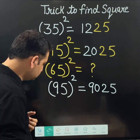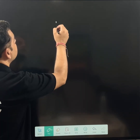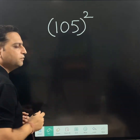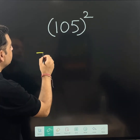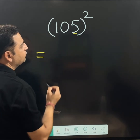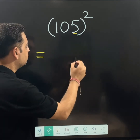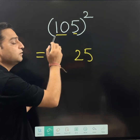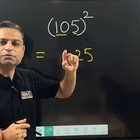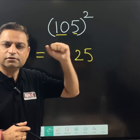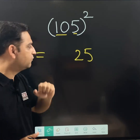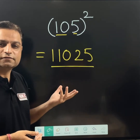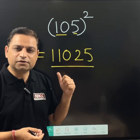We are going to try one question. Let us suppose you have 105 squared. Writing the answer is very easy. This 5 — 5 squared is 25 as I told you. Now consider this number 10 together. 10 should be multiplied with the next number, 11. What is 10 multiplied by 11? That is 110. So the answer is 11025. This rule is applicable for three-digit numbers as well.